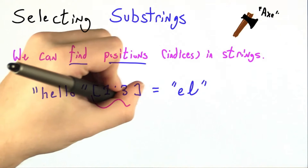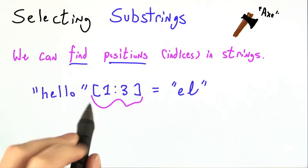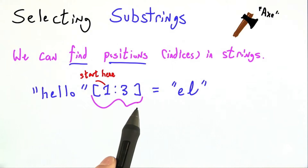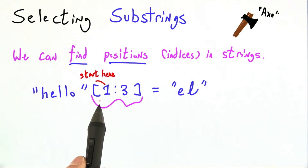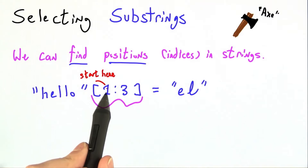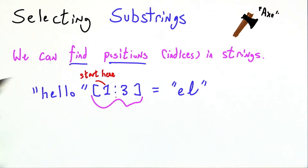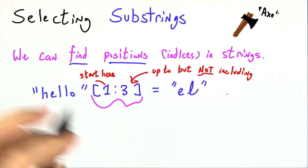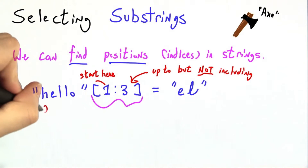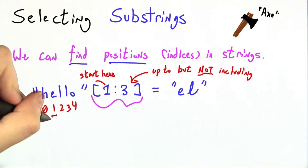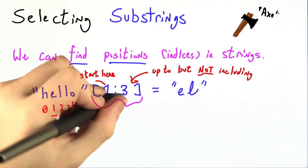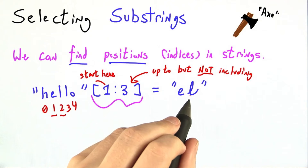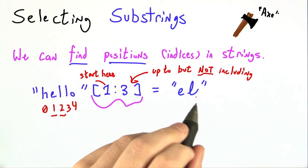The Python syntax for this is to put square brackets after the string, and the interpretation is I want to get the substring that starts at this first number and goes up to but not including this last number. So here if I'm starting at 1 and going up to but not including 2, I'll get the e and the l, and that's exactly what we'd get in Python.